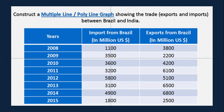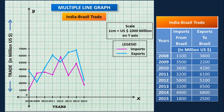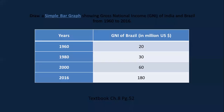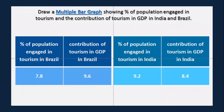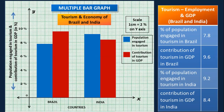For a simple bar graph, choose a scale that fits — for example, if values go up to 200 million, a scale of 25 million or 20 million works. Don't confuse yourself — simply take a clean scale like 2% equals one centimeter. In board exams, do not use color pens — only pencils should be used for shading or drawing lines in graphs.